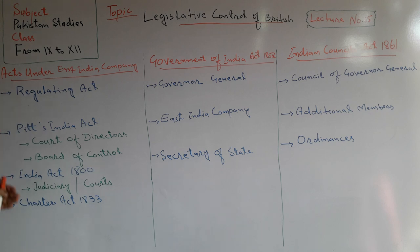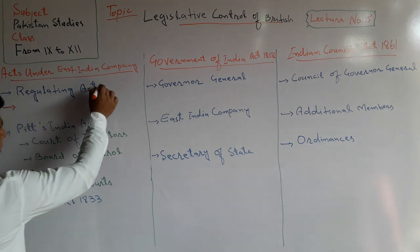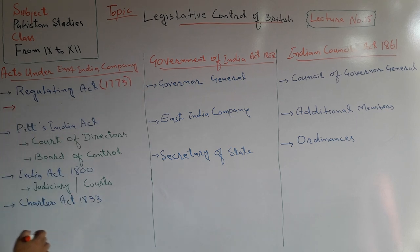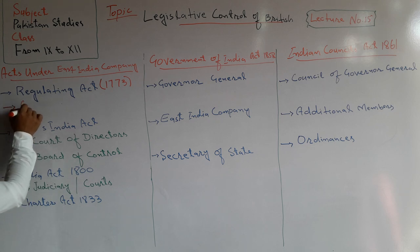When the East India Company ruled the subcontinent, it started enforcing some laws and policies upon the people. First of all, the Regulating Act was enforced in 1773. According to the Regulating Act, the British East India Company appointed a Governor General.